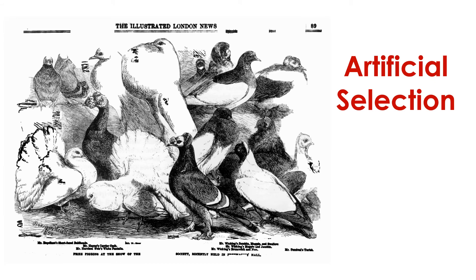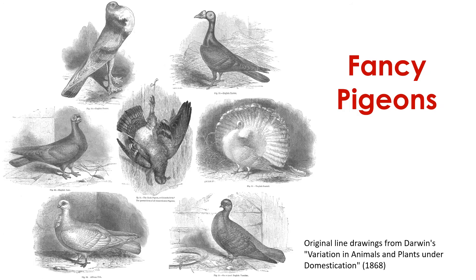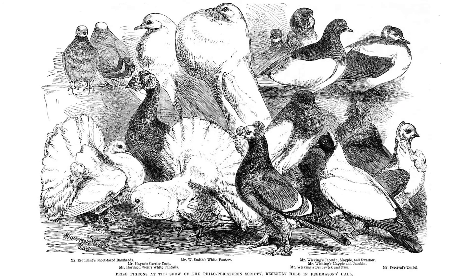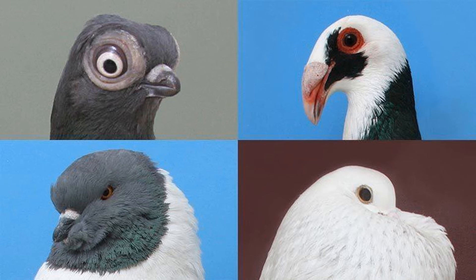Artificial selection is related to the process of domestication. Humans selectively breed organisms to produce offspring with specific sets of characteristics. This is how humans domesticated and produced fancy pigeons — by carefully breeding various types of rock pigeons over many generations, humans have created over 500 different breeds, each with its own distinctive characteristics, all descended from one common rock pigeon ancestor.